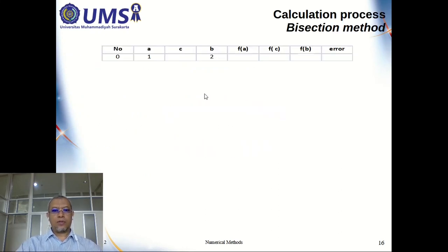The first thing that you have to do is you prepare a table: number, A, C, B, FA, FC, FB, and error. So number here, zero means the initial value.